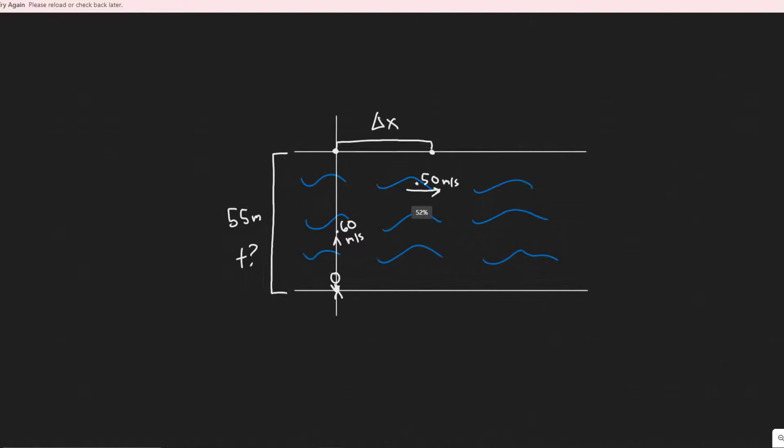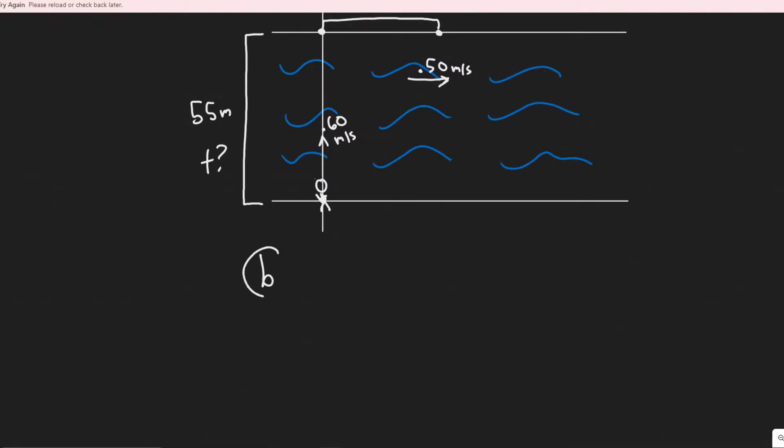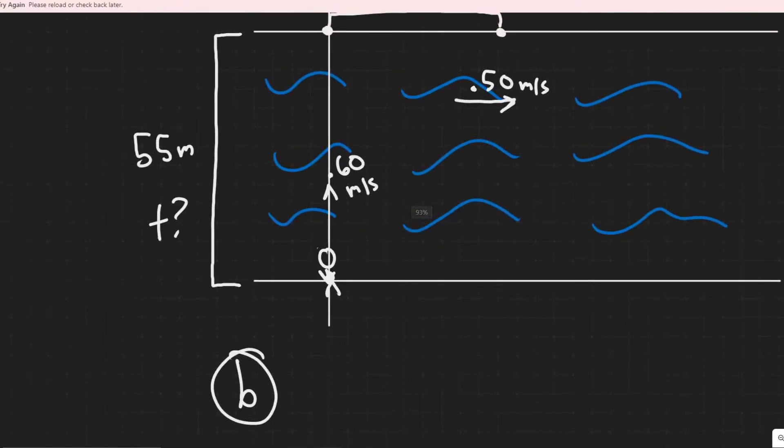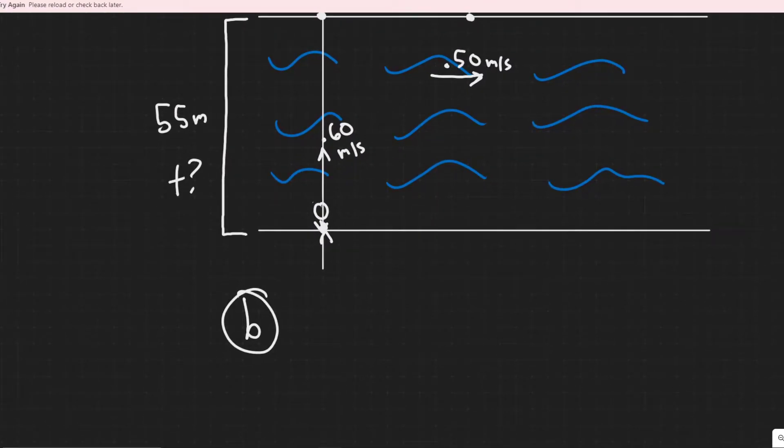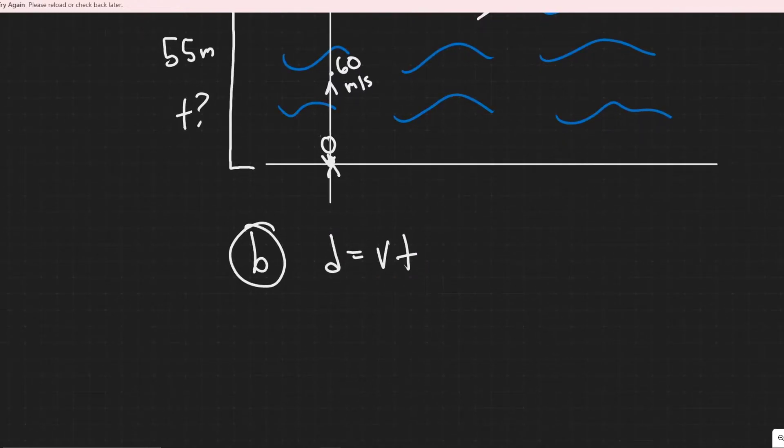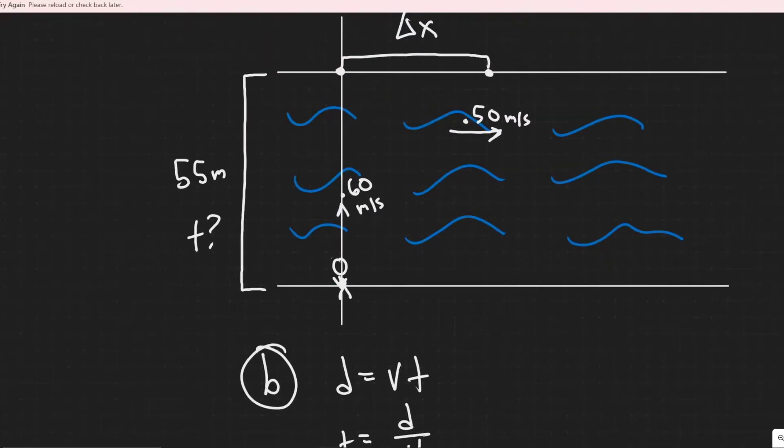So in order to do this I think it's easier to actually start with part b. Part b is how long will it take her to reach the other side, so we want to basically find this time. The way we're going to do it is by using this formula: distance equals velocity times time. So if we know the distance she's traveling and the speed she's going at we can find the time by dividing the distance by the velocity.